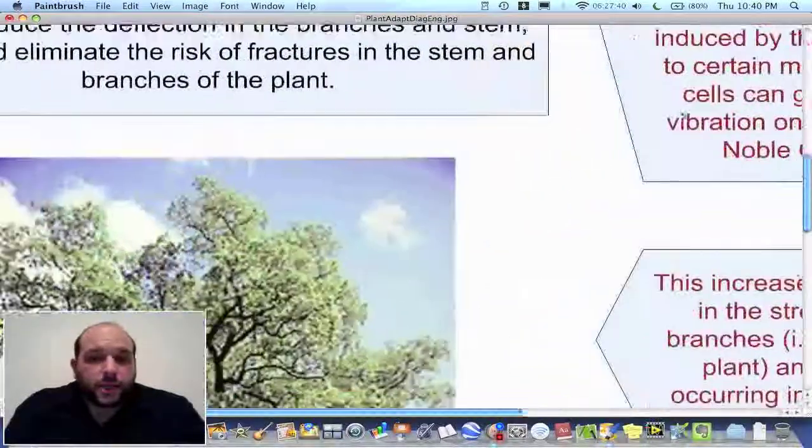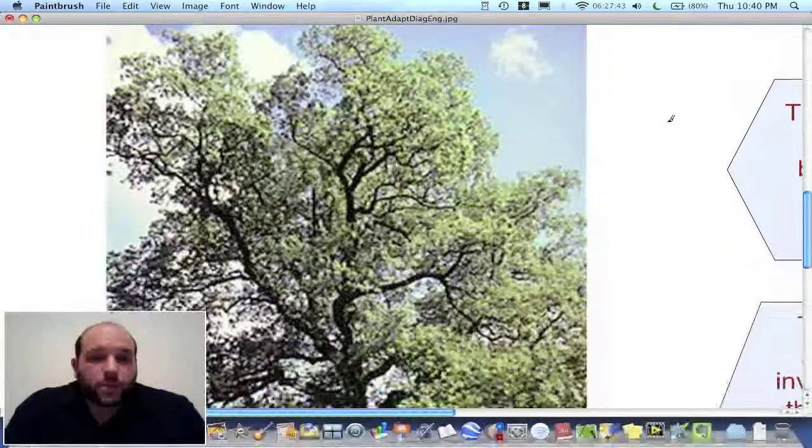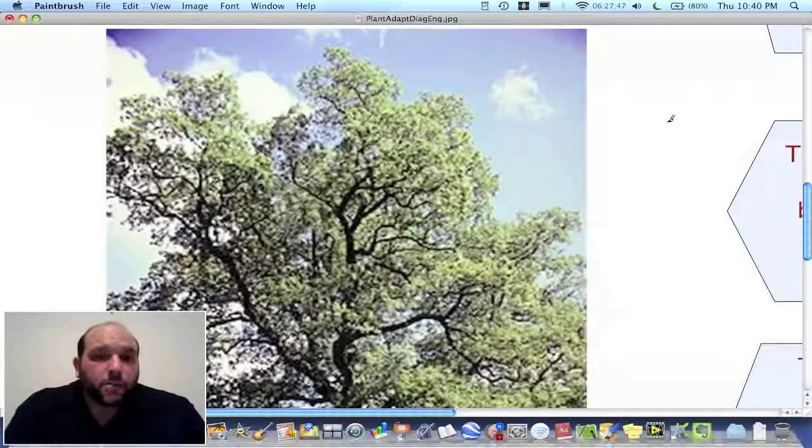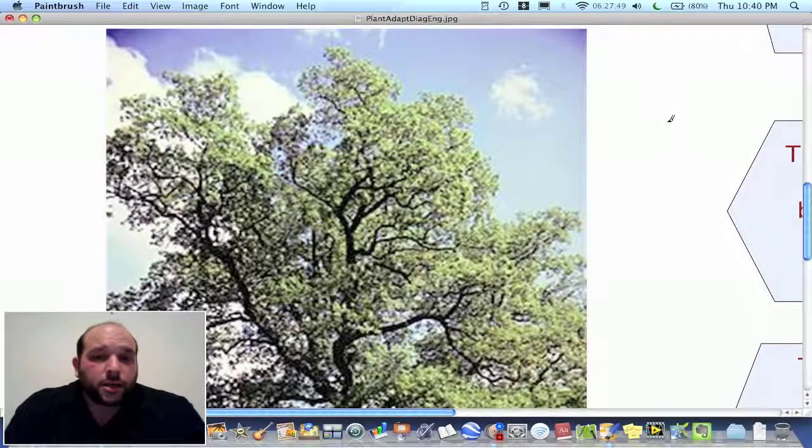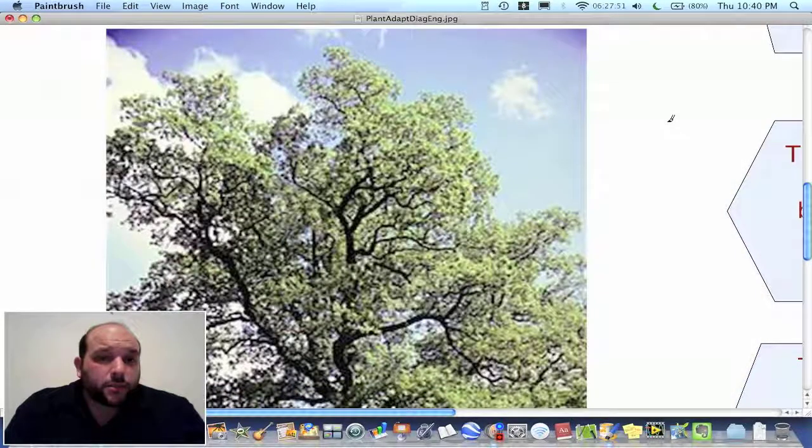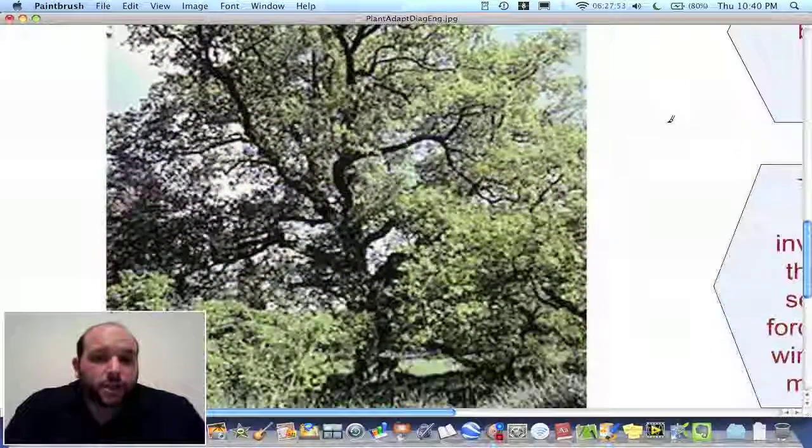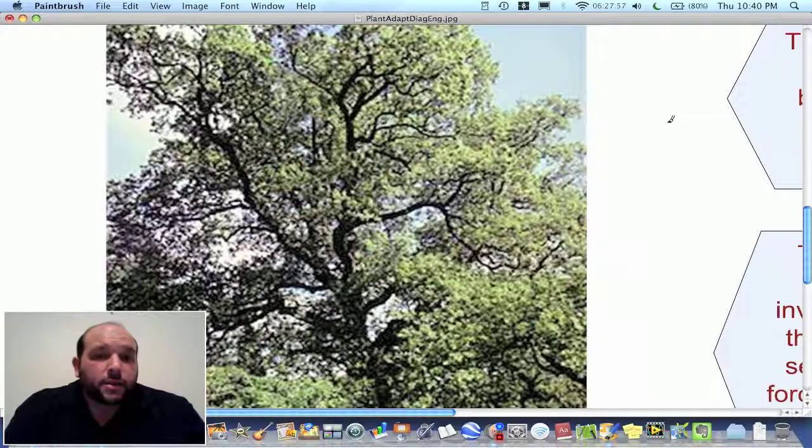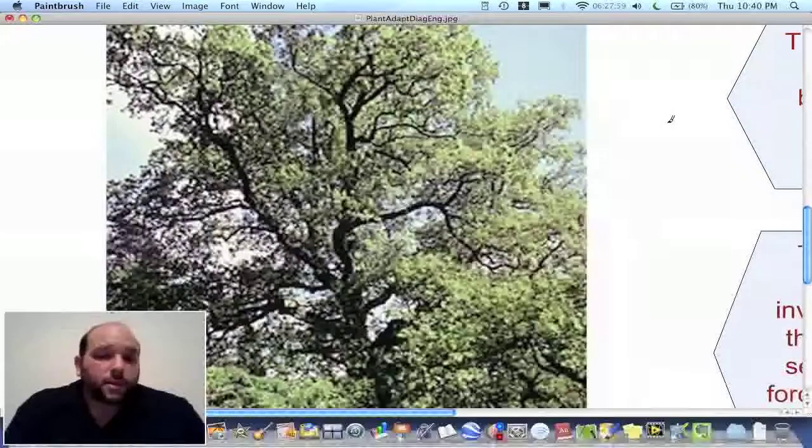So let's take an example here of an oak tree. We see that oak trees, they are located in mountainous areas, regions, where we have strong winds. So we see that the oak tree, it's characterized by having thick branches and thick stems.